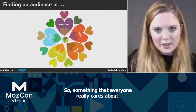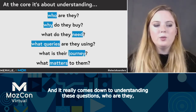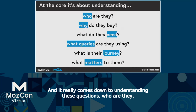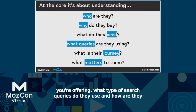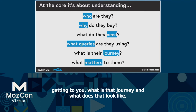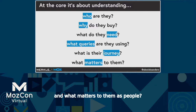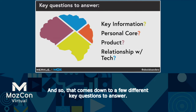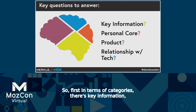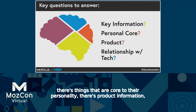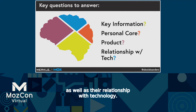It really comes down to understanding these questions: Who are they? Why do they buy? What do they ultimately need in the product or service you're offering? What type of search queries do they use? How are they getting to you — what does that journey look like? And what matters to them as people? That comes down to a few key categories: key information, things that are core to their personality, product information, and their relationship with technology.